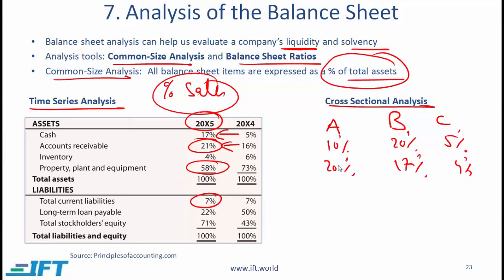To really understand what is good or bad, you can look at industry averages. Within the industry, you can look at numbers or ratios for the best-in-class players and then decide whether the company you are evaluating is doing well or not.